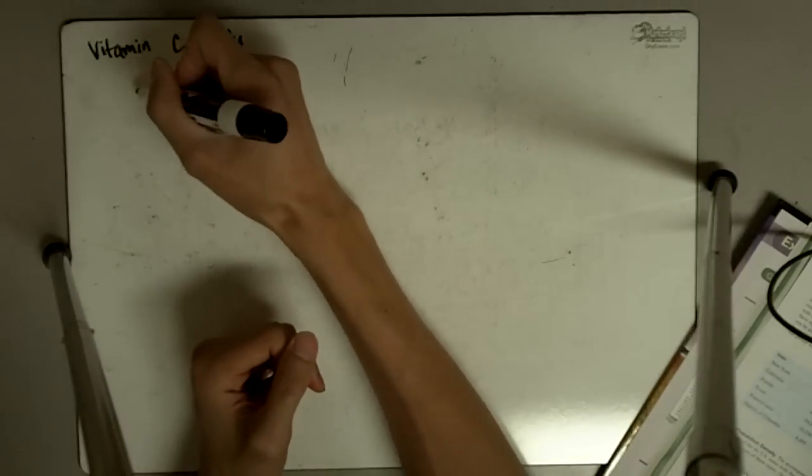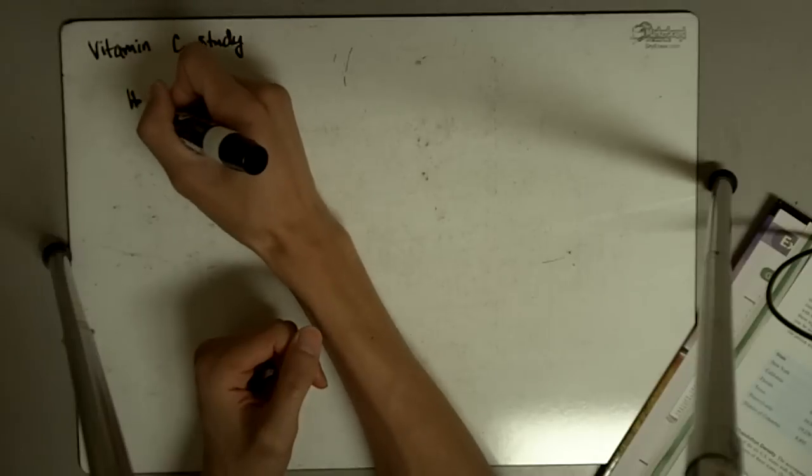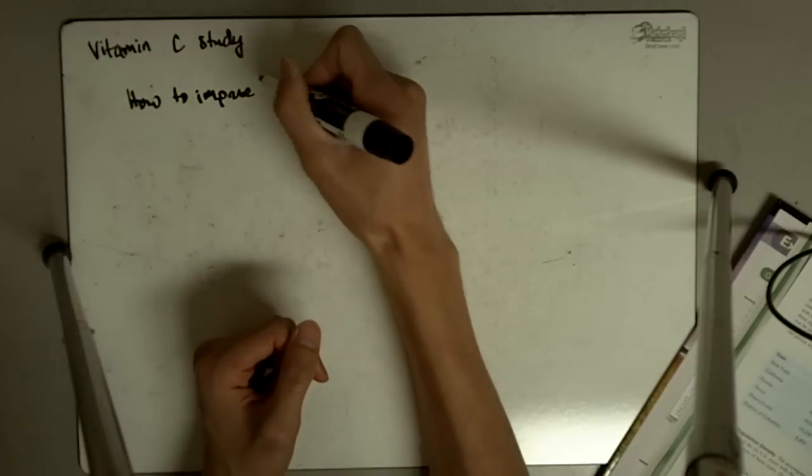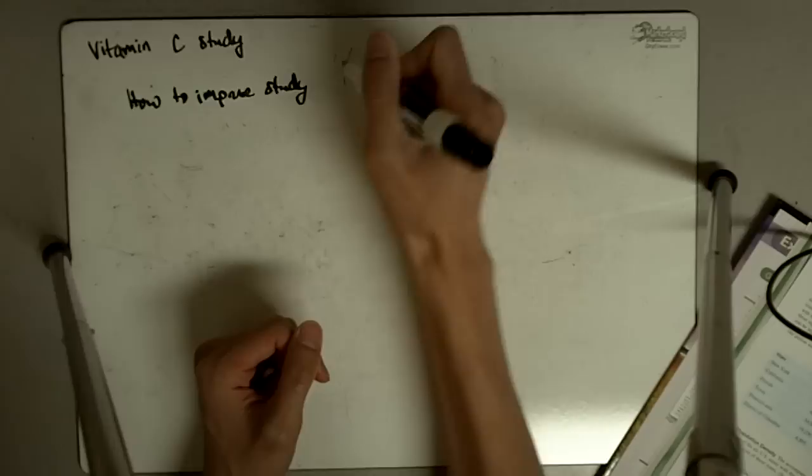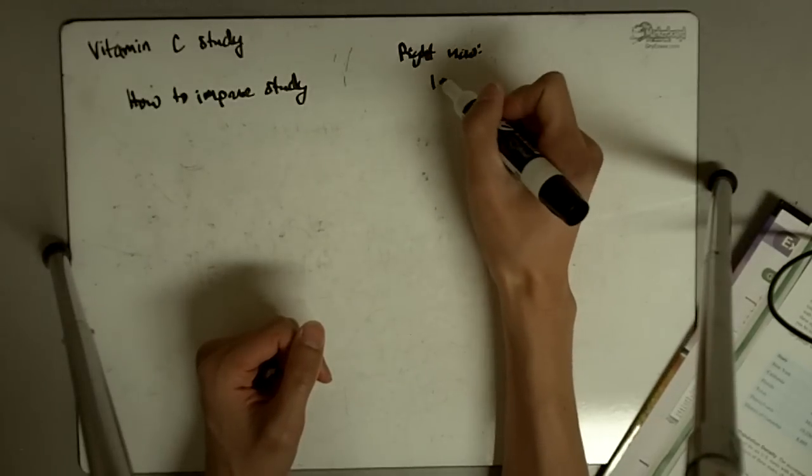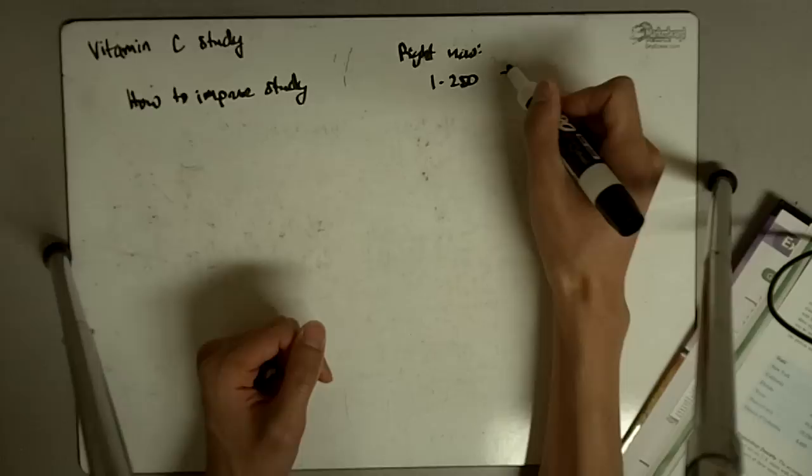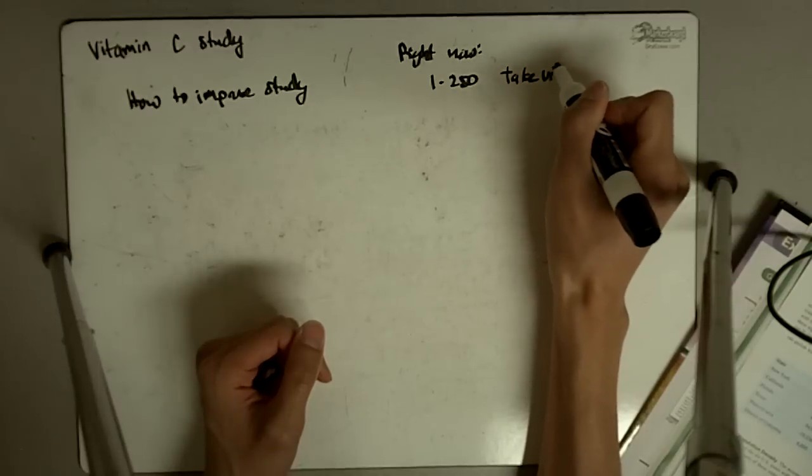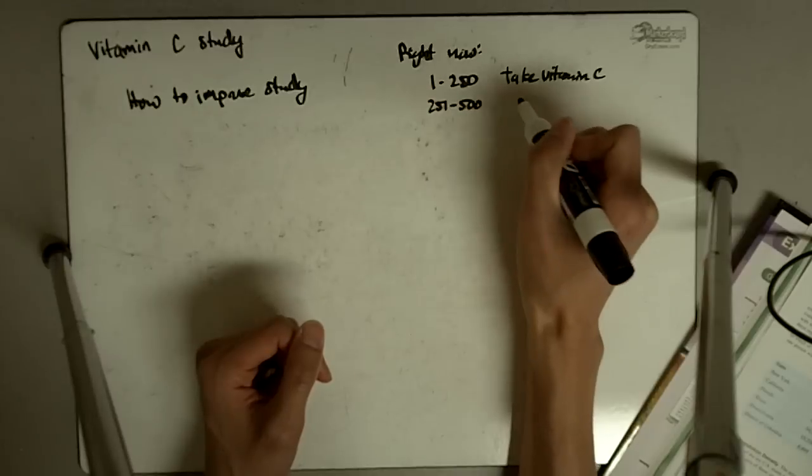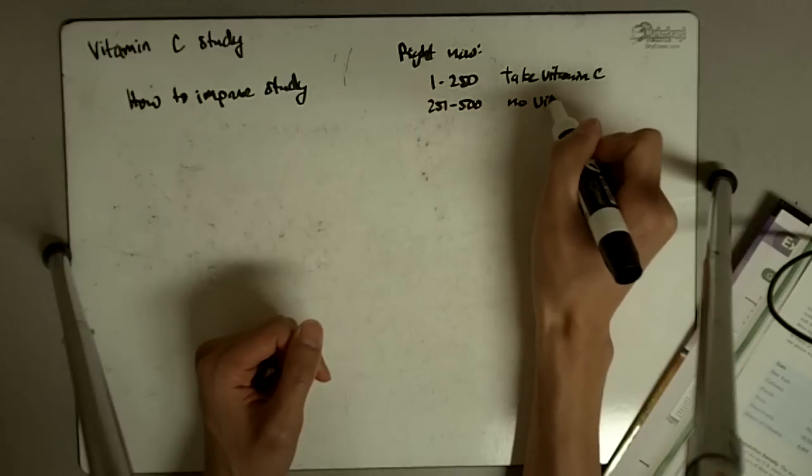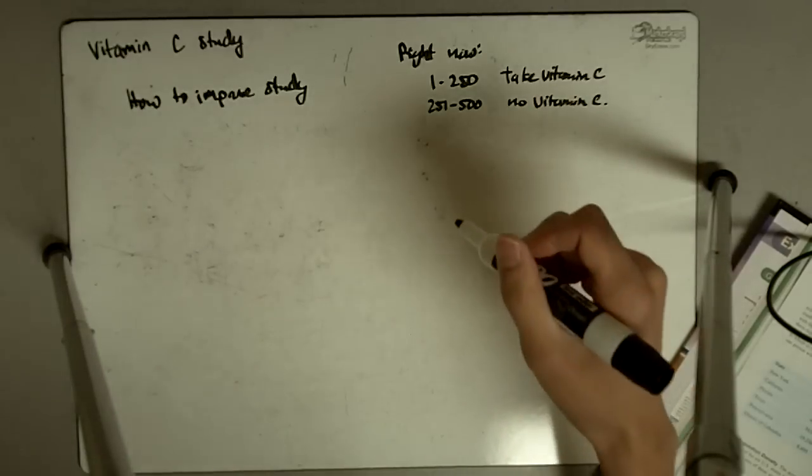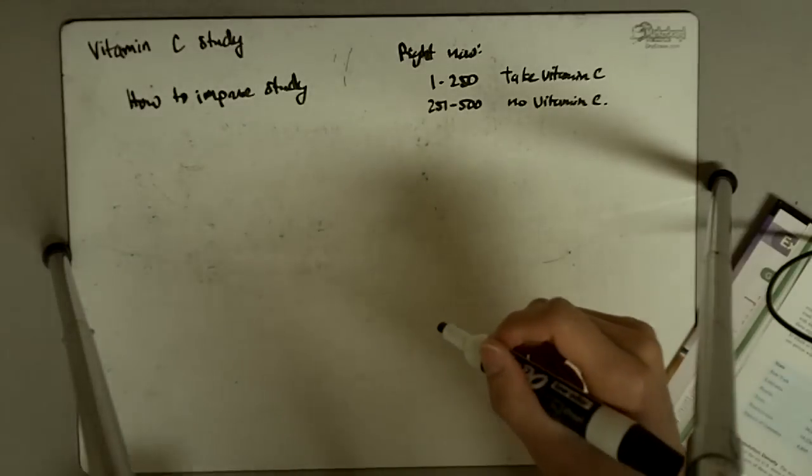Okay, so how to improve the study. Right now the study says numbers 1 through 250 take vitamin C, and then 251 through 500, no vitamin C. That's basically it.